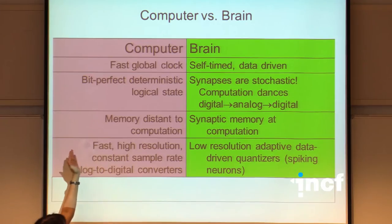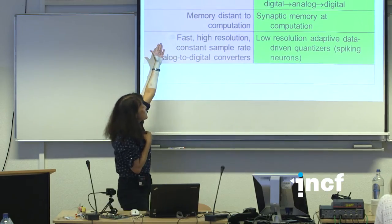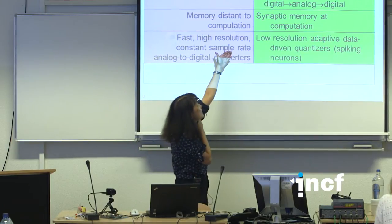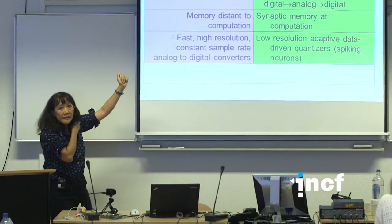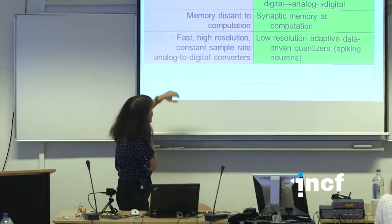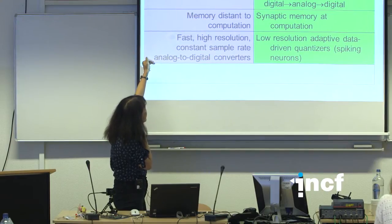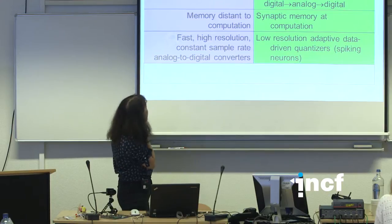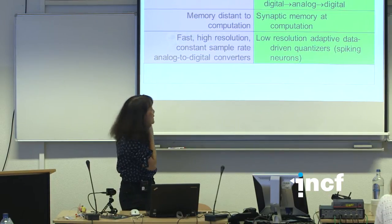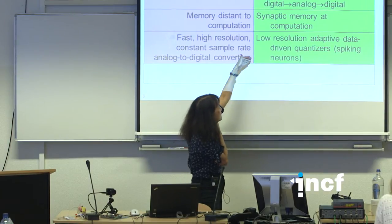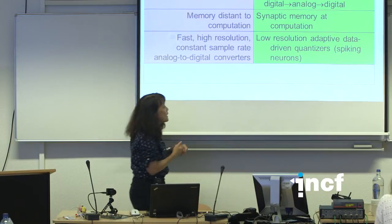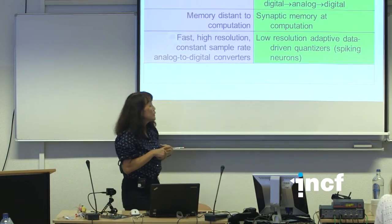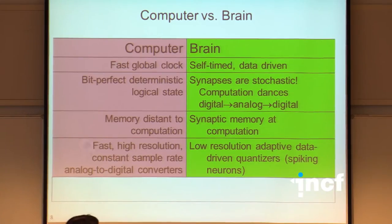The third difference: in a computer, memory is distant from computation, whereas in the brain, synaptic memory is local at the computational unit — the neuron. Finally, computers are fast, high-resolution, with constant sample rates and analog-to-digital converters, whereas neurons are considered low-resolution, adaptive, data-driven quantizers — about 4 bits of resolution versus 64 bits in a computer — and they adapt to the statistics of their inputs.